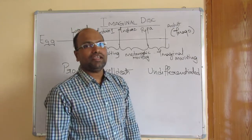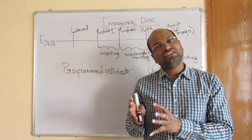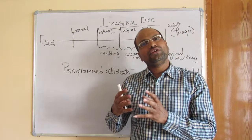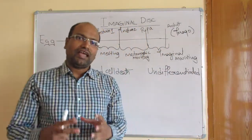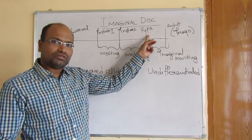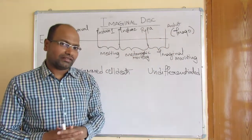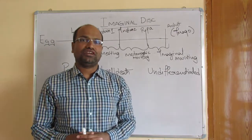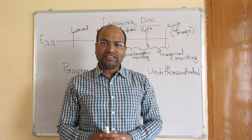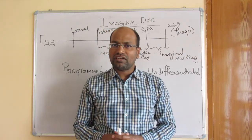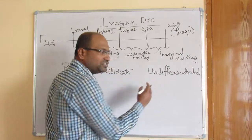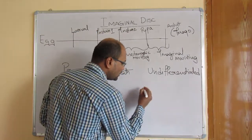Imaginal disc is a group of around 15 to 16 clusters of cells in the case of Drosophila, formed during embryogenesis. These 15 to 16 groups of cells together form the imaginal disc, which is activated during the pupal stage to convert into adult structures. The adult structures — such as leg, antennae, thorax, head region, wings, and genitalia — arise through this imaginal disc.